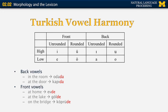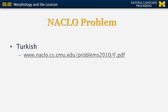With front vowels: 'ev' means home, so 'evde' is 'at home.' 'Göl' is lake, so 'gölde' is 'at the lake.' And 'köprü' is bridge, so 'köprüde' is 'on the bridge.' There is a NACLO problem that talks about Turkish vowel harmony and other interesting phenomena, which you can access from the listed website, and then look at the solution when you're done.